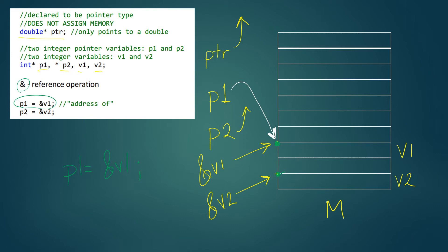When we do that, we now have two ways to access this variable: we can access it by V1, or we can access it by the value at P1. Those are two different ways to access the same variable. We don't have any value assigned yet. The second statement assigns the address of V2 to P2, so P2 will point to V2 in memory, and that location can also be accessed as the value at P2.